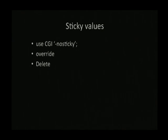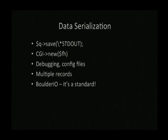So if you set a parameter and then print out the form with the same name using the same CGI object, you're going to find the values stick around. So you get persistence. That's why you need override and delete and die — go away, Param. And it has its own data serialization format. You can just save your arguments to standard output or any other file handle. And you can reinitialize a new object from that file handle. This can be used for debugging, config files, multiple records. Yes, you can have multiple CGI requests serialized together.